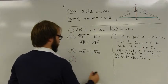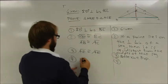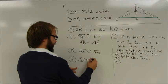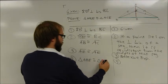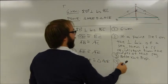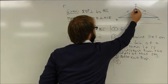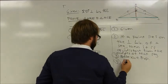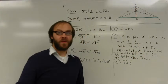And I'm done. Triangle ABE is congruent to triangle ACE and that's just by the side, side, side rule.